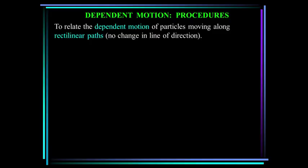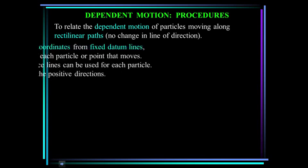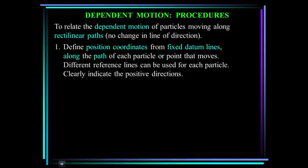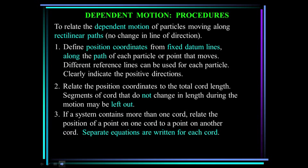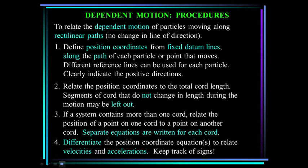Here are some procedures to solve dependent motion problems. To relate the dependent motion of particles moving along rectilinear paths, first define position coordinates from fixed datum lines along the path of each particle or point that moves. Different reference lines can be used for each particle; clearly indicate the positive directions. Relate the position coordinates to the total cord length — segments of cord that do not change in length during the motion may be left out. If a system contains more than one cord, relate the position of a point on one cord to a point on another cord; separate equations are written for each cord. Differentiate the position coordinate equations to relate velocities and accelerations. Keep track of signs — very important.